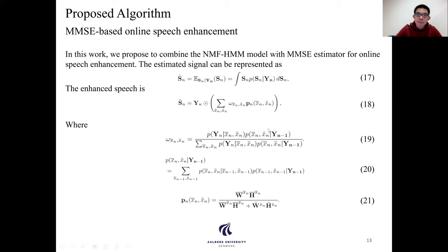The omega can be calculated by using the forward algorithm and the posterior probability. And the P_n can be written as equation 21. By applying those equations, we are able to obtain the enhanced speech by using equation 18.